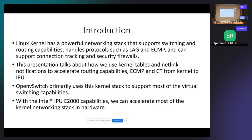Kernel is used for physical networking. OpenVSwitch is a virtual switch component that works with our entire architecture and uses the kernel stack to support most virtual switching capabilities. When we configure VXLAN into OpenVSwitch, that actually gets configured in the kernel. We read the kernel updates for VXLAN and port VXLAN into the hardware. We have taken Intel IPU E2000 as an example, and were able to accelerate most of the networking functionality in the hardware using this IPU.